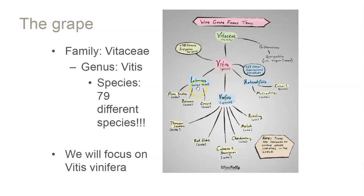Then you have Vitis Labrusca — these are what are considered Labruscana grapes. True Labrusca is not self-fertile, so it needs a male and a female plant to pollinate. Labruscana grapes are mostly Labrusca in their parentage but have some Vitis vinifera or something else in them, making them self-fertile, which is why we grow them on farms. It's much easier when they pollinate themselves.